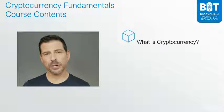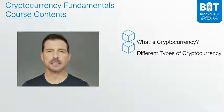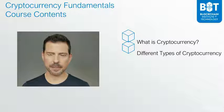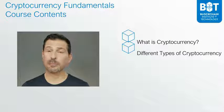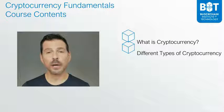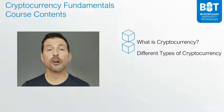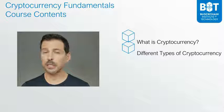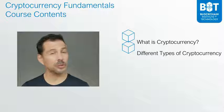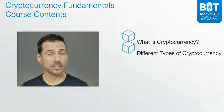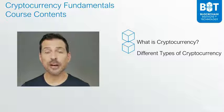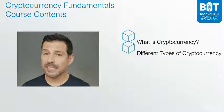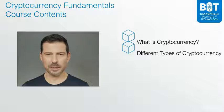We will follow that with the different types of cryptocurrency. Because Bitcoin, which is the most popular type of cryptocurrency, is only one. There are hundreds of other ones. You may know about Litecoin, perhaps Ethereum. But do you know about Dash? Do you know about Monero and the hundreds of other digital assets that are constantly being created?